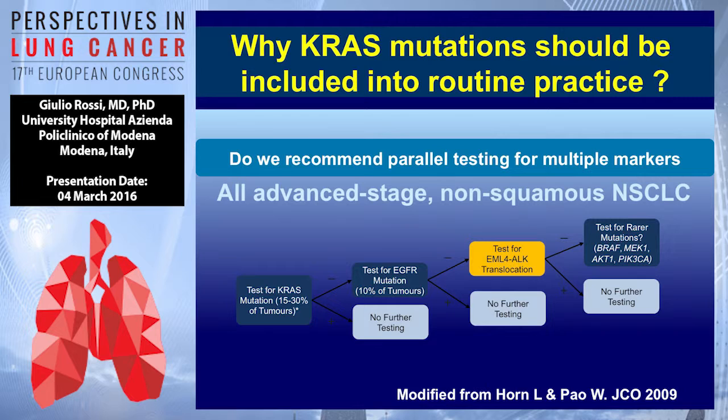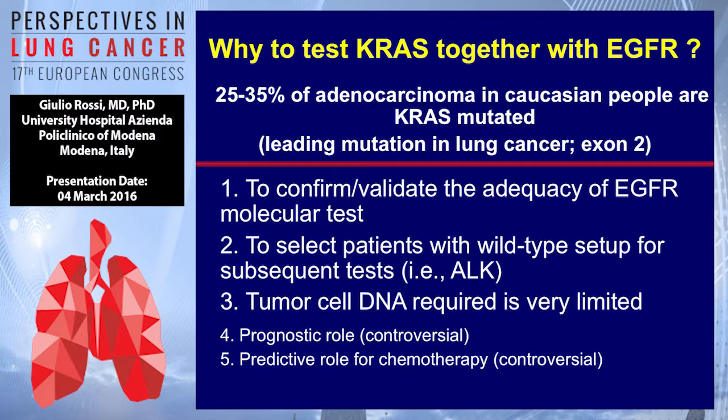I prefer to include KRAS mutation in our algorithm because KRAS accounts for about one-third of patients in Europe. It's important to select patients for further studies. KRAS requires minimal DNA — just one exon. With multiplex machines, KRAS and other markers including EGFR, HER2, and BRAF are determined simultaneously in the same run, so we essentially have KRAS mutation by default.